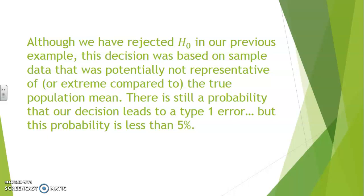Although we have rejected H0 in our previous example, this decision was based on sample data that was potentially not representative or extreme compared to the true population mean. There is still a probability that our decision leads to a type 1 error, but this probability is less than 5%.